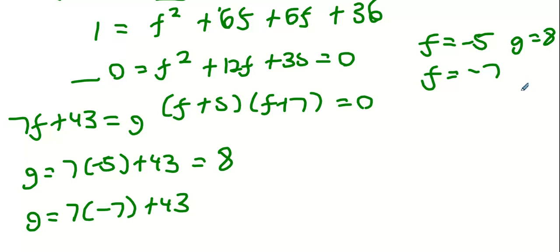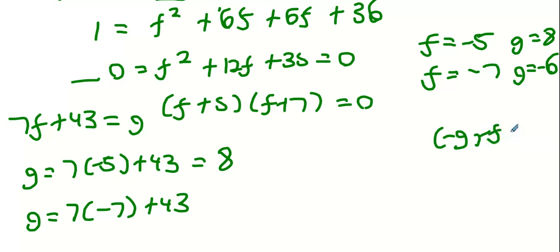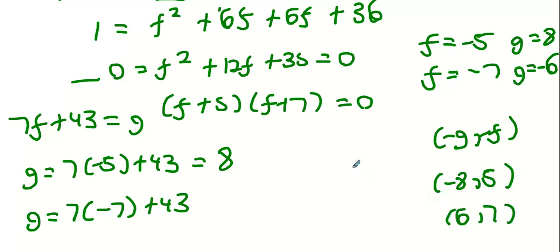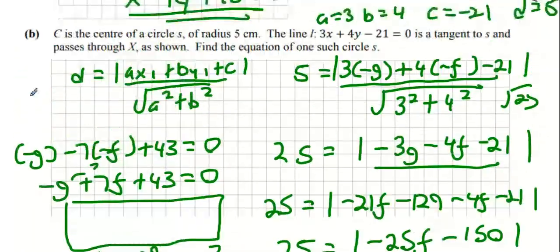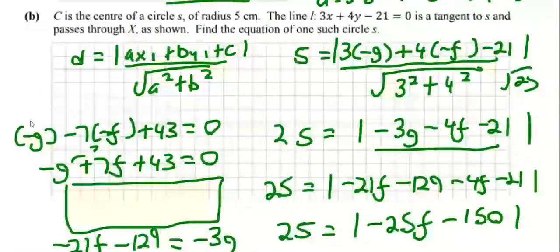Remember the centers of the circle are at (minus g, minus f). So one center is (minus 8, 5) and the other center is (6, 7). The radius is 5 in both cases.